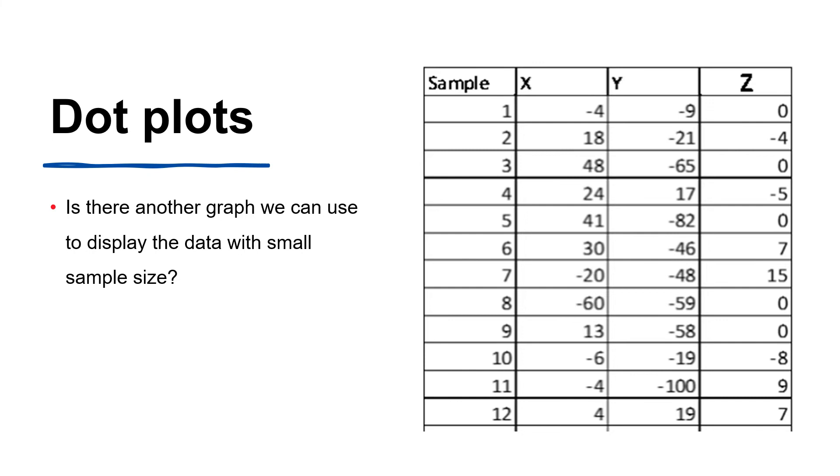Unlike the histogram, which aggregates data into few wide bars, the dot plot uses narrow bins and displays a dot for each data value in the bin.